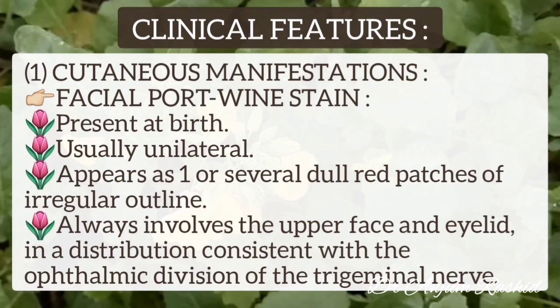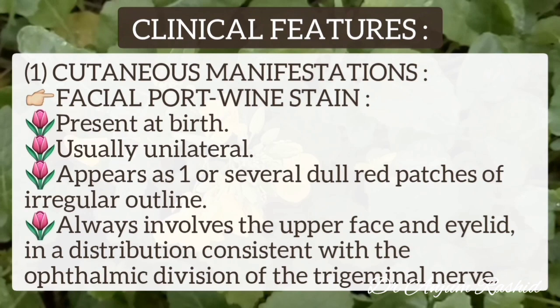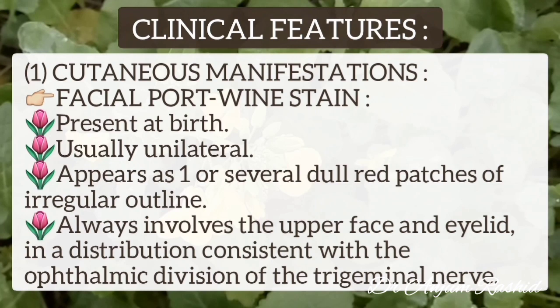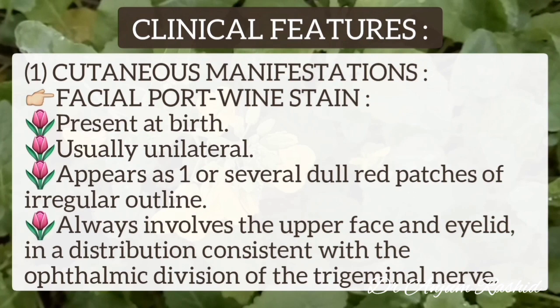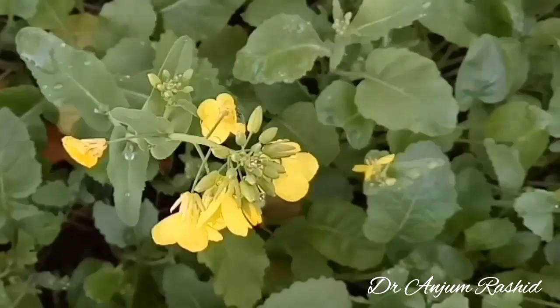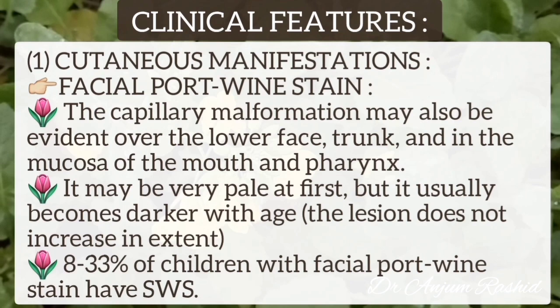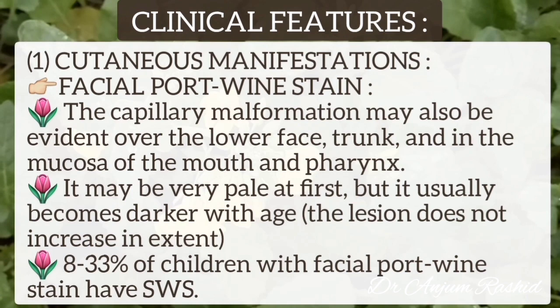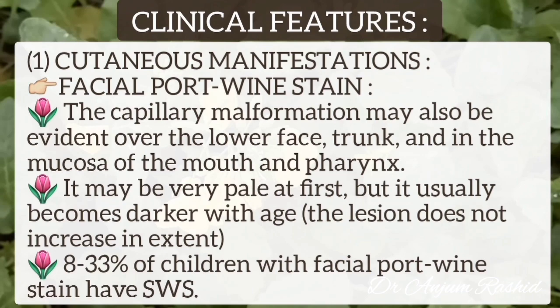In cutaneous manifestation, it is the facial port-wine stain. It is present at birth and is usually unilateral, but it may be bilateral, and it appears as one or several dull red patches of irregular outline. It mostly involves the upper face and eyelid in a distribution consistent with the ophthalmic division of the trigeminal nerve. This capillary malformation may also be evident over the lower face, trunk, and in the mucosa of the mouth and pharynx. It may be very pale at first but usually becomes darker with age; however, the lesion does not increase in extent. It is important to note that only 8 to 33% of children with facial port-wine stain develop Sturge-Weber syndrome.